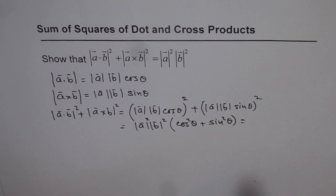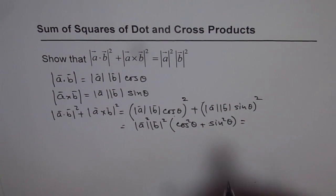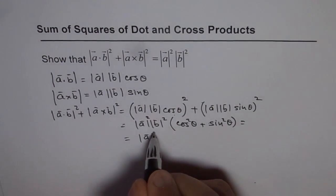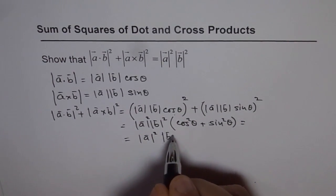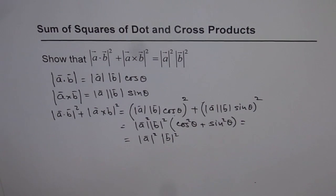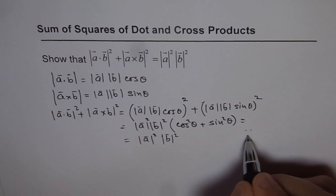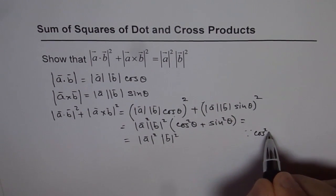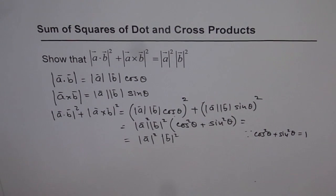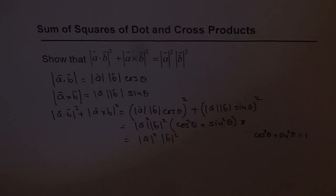And as you know, cosine square theta plus sine square theta is 1. So we can write this as equal to magnitude of A square times magnitude of B square. And that is what we wanted to prove. Since cosine square theta plus sine square theta equals to 1, that is how we can show that. Thank you.